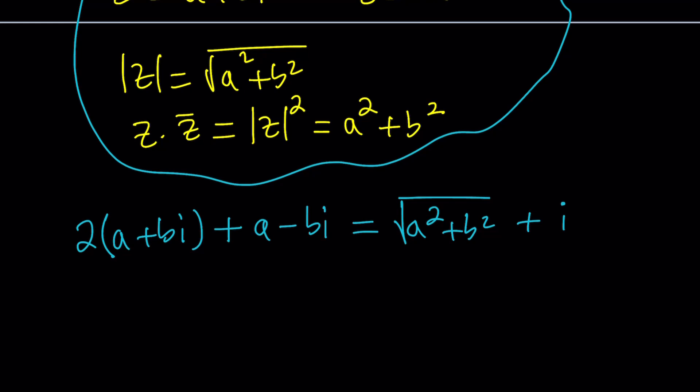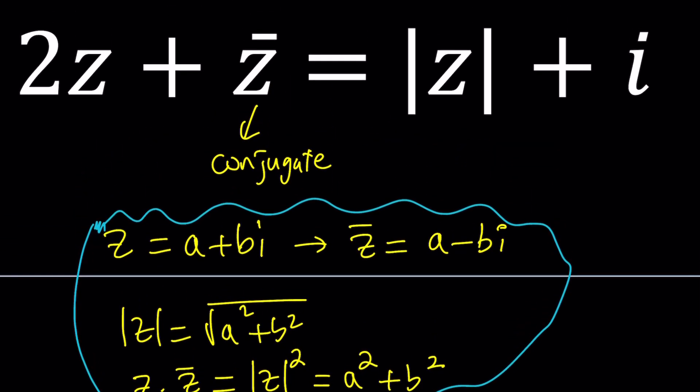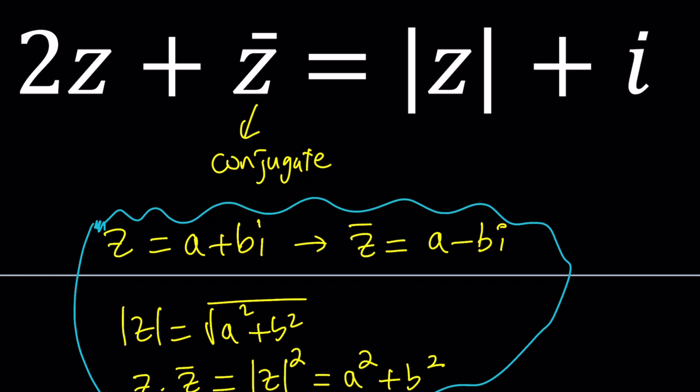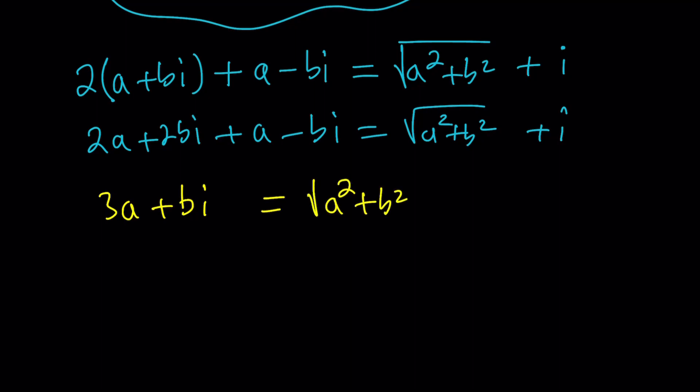We do have complex numbers on both sides and they are equal. We're going to find the A, B values that satisfy this equation. Notice that absolute value of Z is also a real number which is non-negative and then I is an imaginary number. On the left hand side the same thing happens. Let's distribute. This gives us 2A plus 2BI plus A minus BI equals the right hand side. We can combine like terms, the real parts and the imaginary parts. 2A plus A equals 3A. 2BI minus BI is BI and that equals the square root of A squared plus B squared plus I.